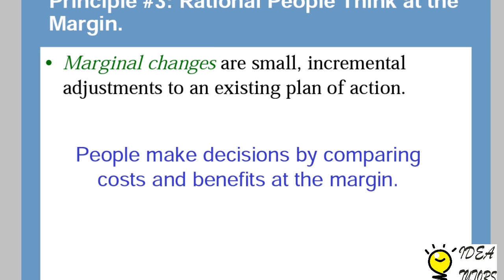The third principle is: rational people think at the margin. Marginal changes are small, incremental adjustments to an existing plan of action. People make decisions by comparing costs and benefits at the margin. In preceding chapters we will be deciding on quantities to produce based on the marginal cost or marginal benefit of producing one more unit of a particular good.